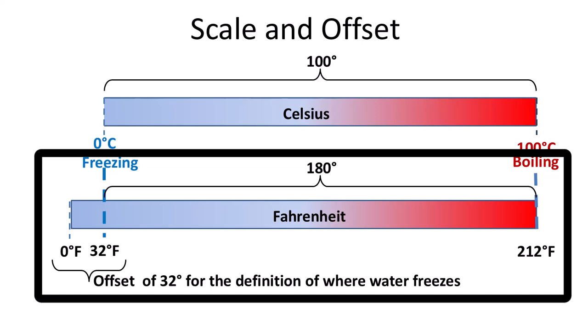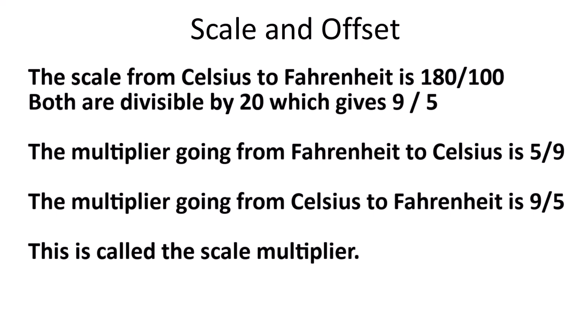But there is an offset from 0 degrees to where water freezes at 32 degrees Fahrenheit. The scale from Celsius to Fahrenheit is 180 divided by 100. Both are divisible by 20, which gives 9 divided by 5. The multiplier going from Fahrenheit to Celsius is 5 divided by 9. The multiplier going from Celsius is 9 divided by 5. This is called the scale multiplier. The easy way to remember is that the number for boiling on Fahrenheit is larger and Celsius is smaller. Use the multiplier 9 divided by 5 when going to Fahrenheit. Use 5 divided by 9 when going to Celsius.